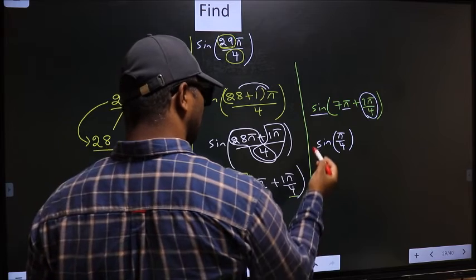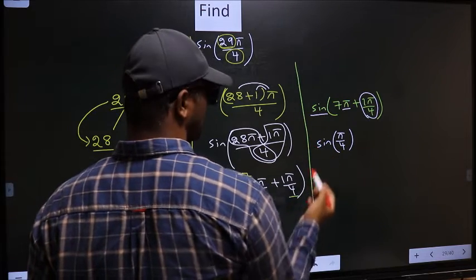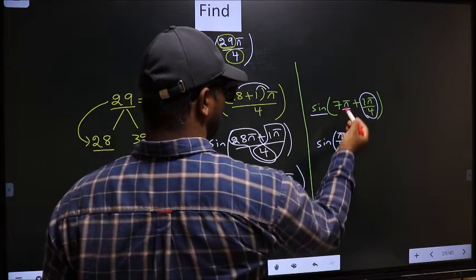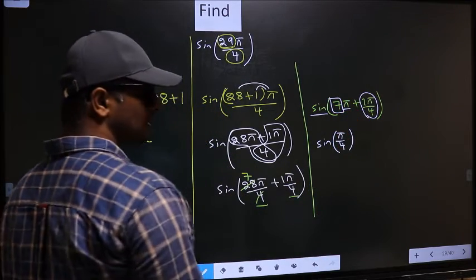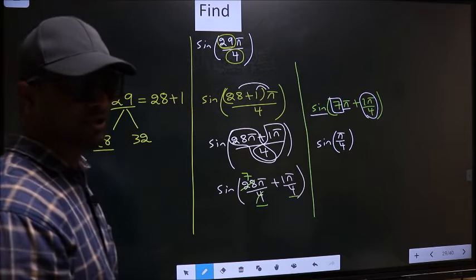Now the question is, will we get here plus or minus? To answer that, we look at the number before π. That is 7 here, and 7 is odd.